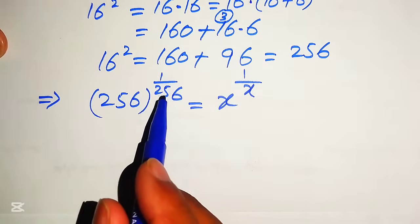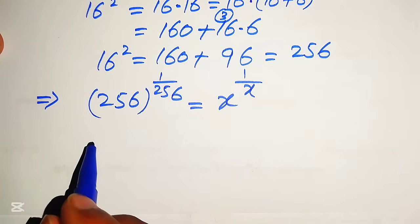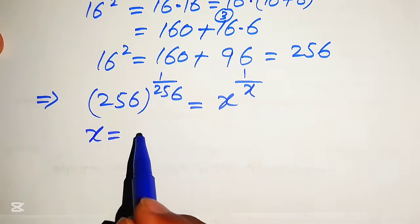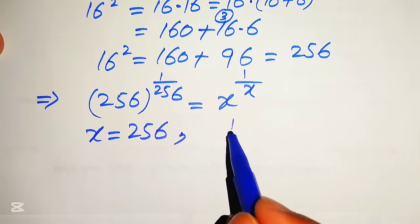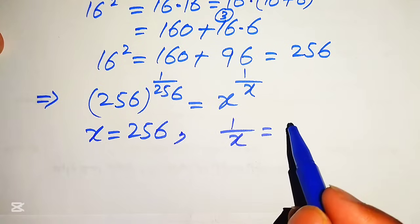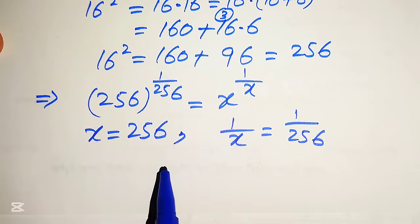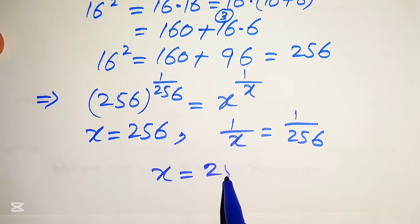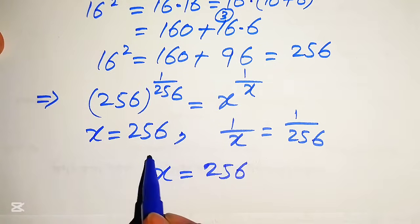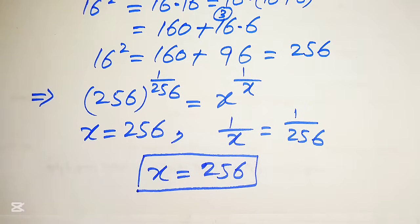Now the exponent is the reciprocal of its base on both sides. Comparing the bases, we get x equals 256; comparing the exponents, we get 1 over x equals 1 over 256, which also gives x equals 256. So from both cases, the final answer is x equals 256. Thank you so much for watching this video — please subscribe to my channel for more exciting videos.